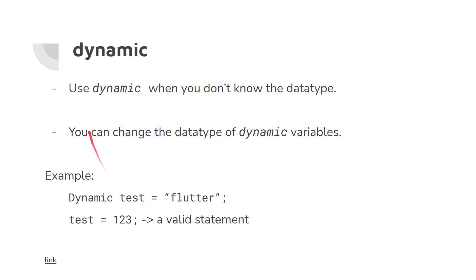'Dynamic' is used when you don't know the data type and you want to be able to change the data type of a variable. For example, 'dynamic test = "Flutter"' and then later 'test = 123' — the type changes from String to integer.